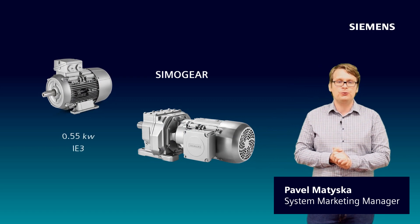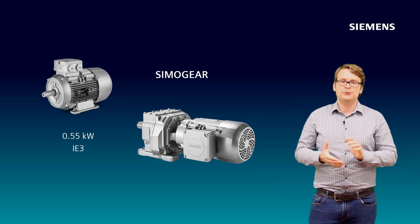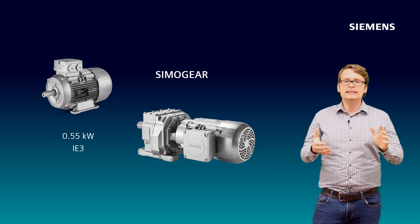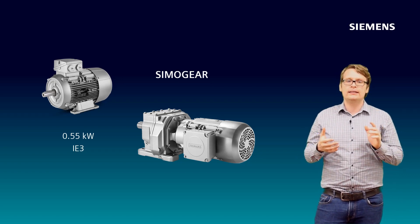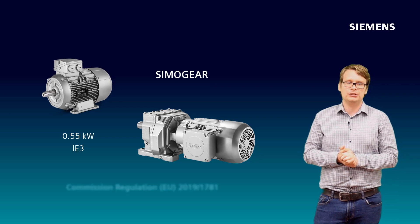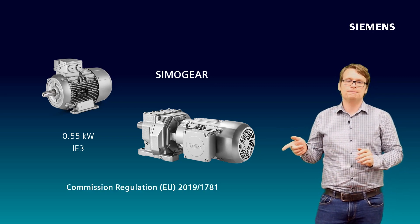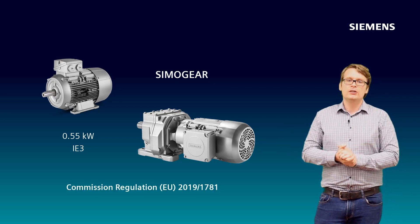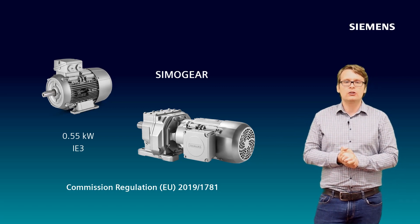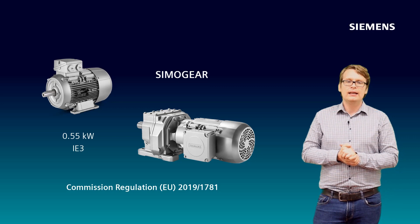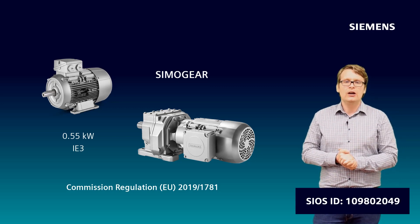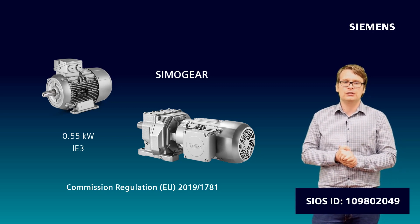The CIMOGEAR portfolio has been extended with 0.55 kW motors in IE3 efficiency class. This IE3 efficiency for 0.55 kW motors exceeds the requirements from the EU mentioned here. It is required from July 2021 that all motors from 0.75 kW must fulfill IE3 also in converter operation.